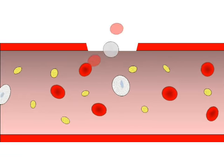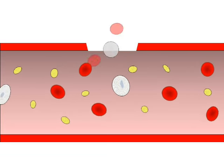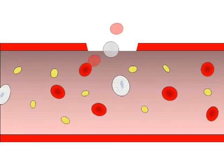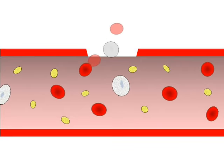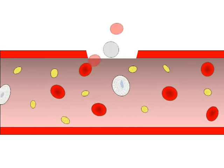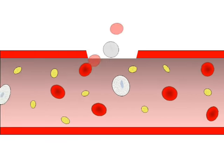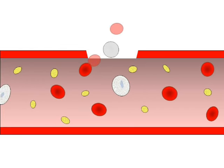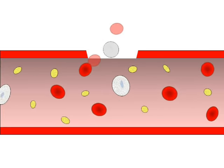When the vessel wall is torn open by an injury, blood begins to escape. In response to this damage, the vessel quickly constricts, reducing the flow of blood. This constriction lasts only for a few minutes as the body puts in place a plug to stop the bleeding.